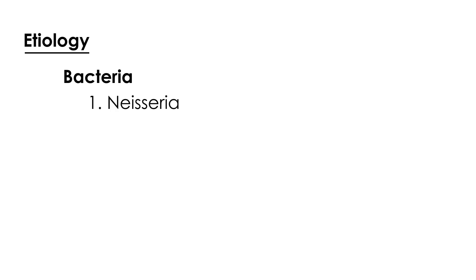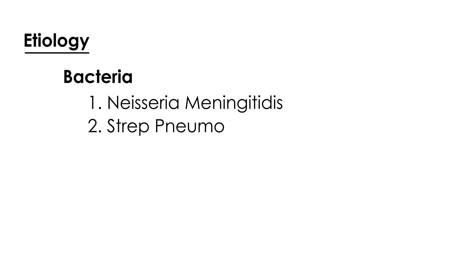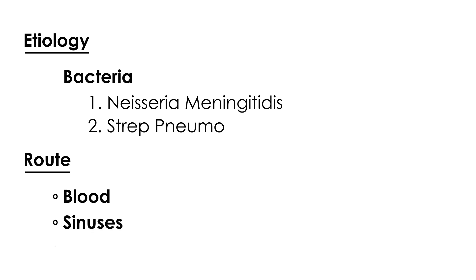What is the etiology of meningitis? There's a long list of bacteria, but two in particular are very commonly tested: the first is Neisseria meningitidis, and the second is Streptococcus pneumoniae. Regarding routes of infection, the most common is through the bloodstream, the next is through the sinuses, and the third is through some sort of wound or surgical procedure.